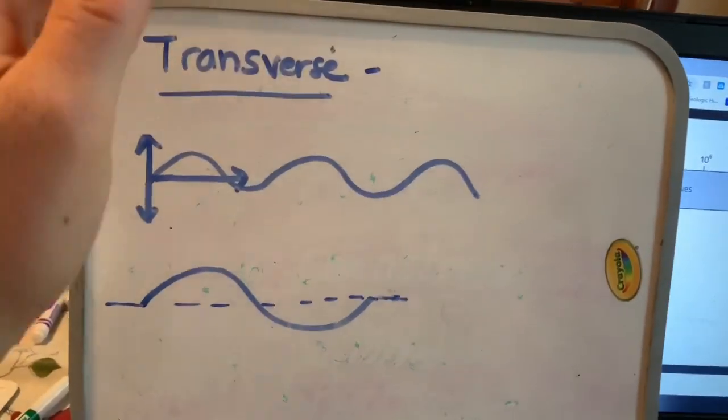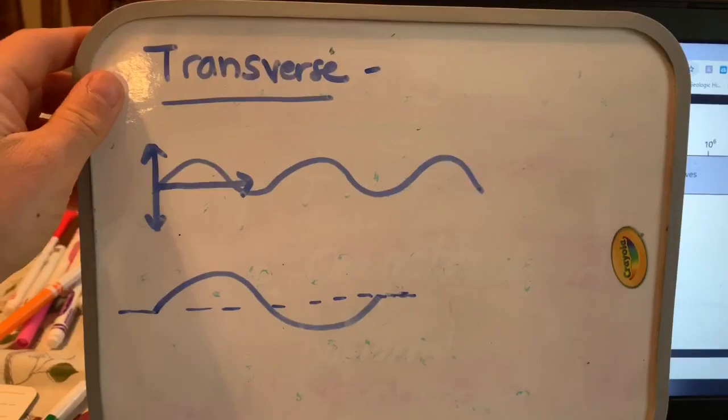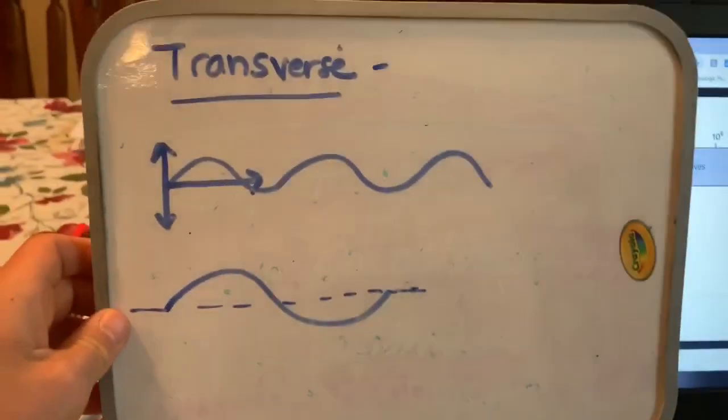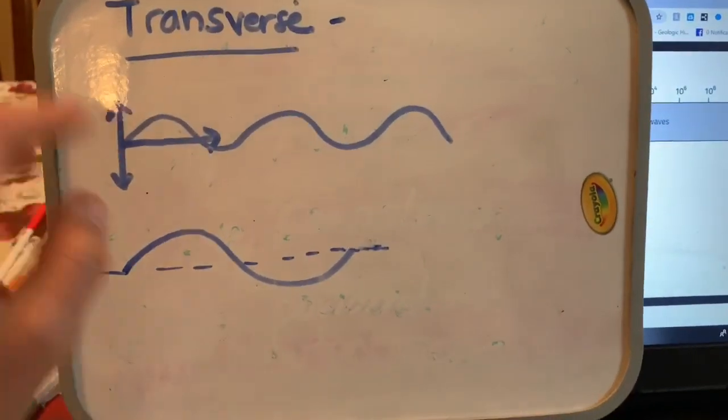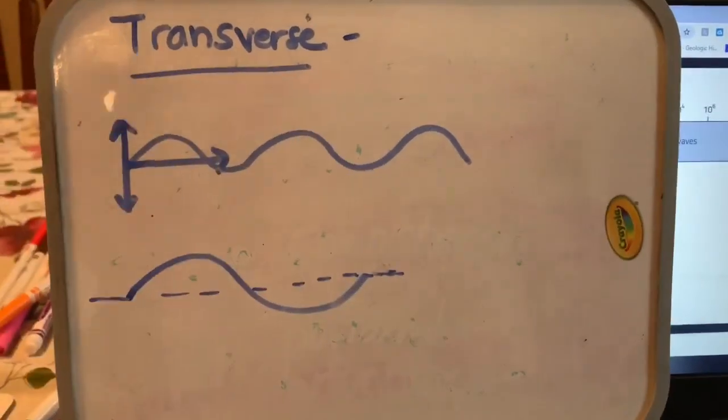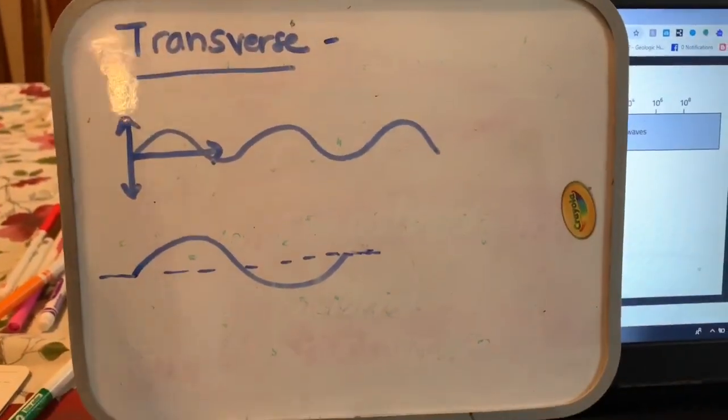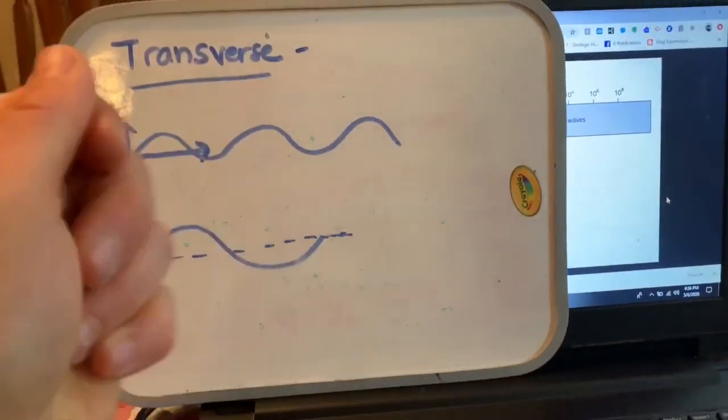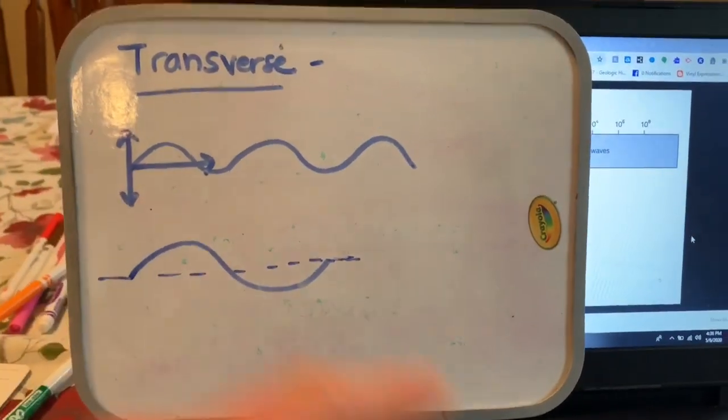The first I'm going to start with is transverse because this is probably the one that you're more familiar with. So transverse waves actually have this wave-like shape. Technically, if we're talking about water waves or if you took a rope and moved it around, those would be transverse waves.